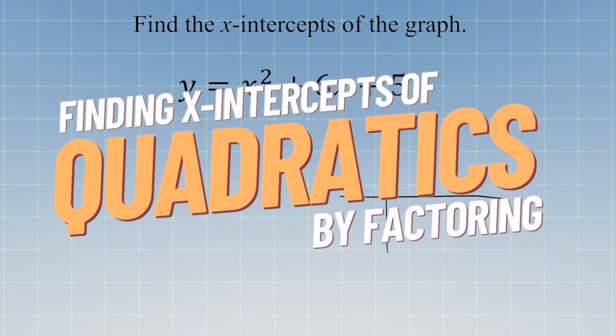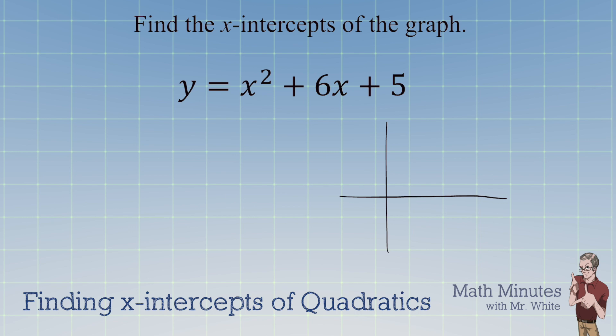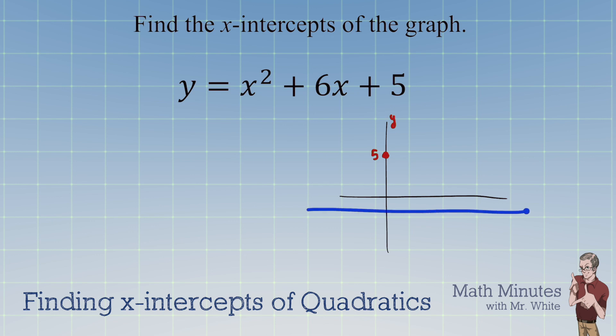The goal of this video is to show you how to find x-intercepts of the graph. You've probably already talked about how to find the y-intercept — that's this number at the end when you're in standard form, so we know this graph goes through 5 on the y-axis. We're going to find the x-intercepts, also called zeros, by factoring the quadratic function and setting each factor to 0.